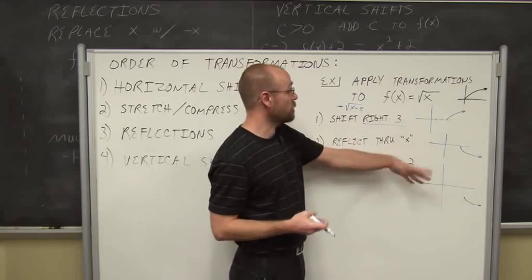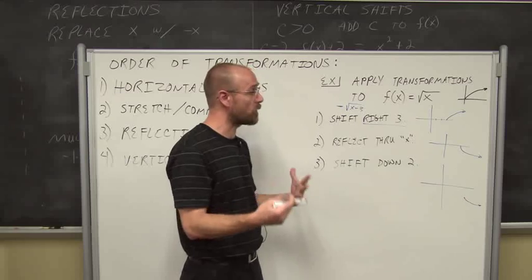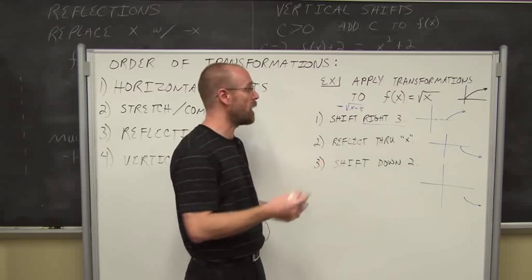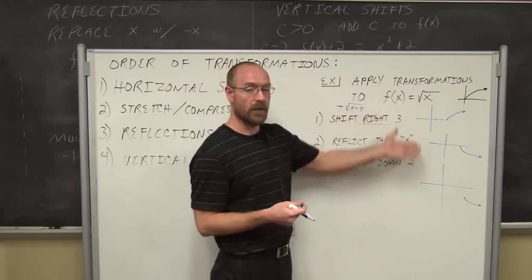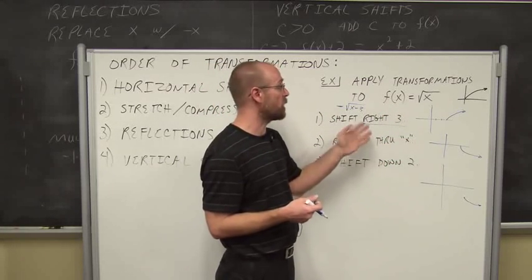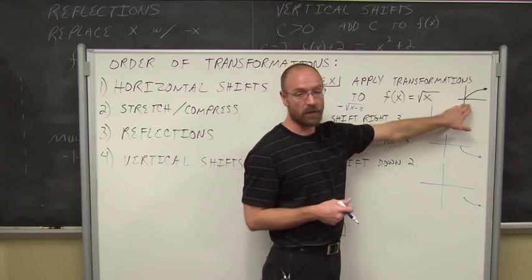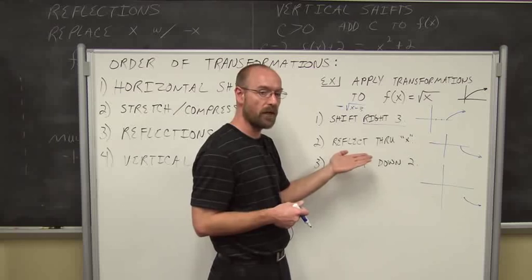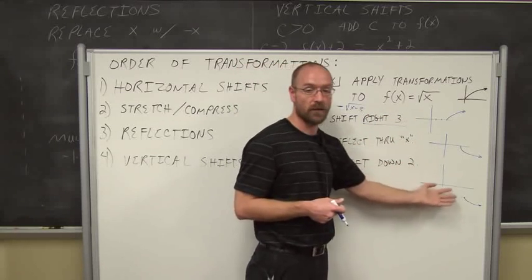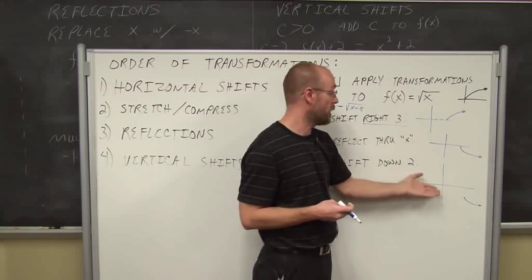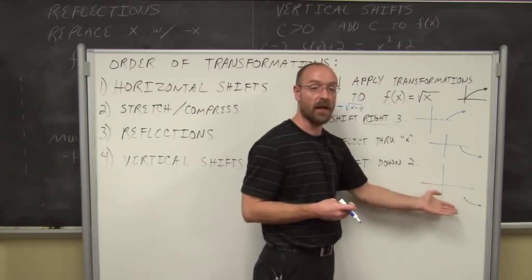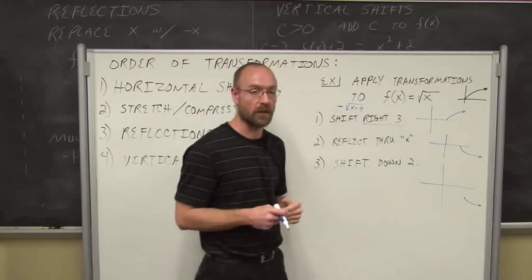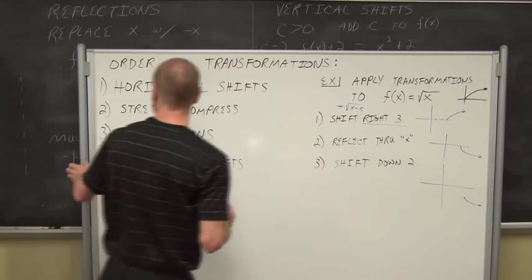So this is relatively simple. When we deal with linear functions, we always needed two points to graph a line. For nonlinear equations, we need more points, but if we understand the library function's behavior, we can use transformations to understand what the graph looks like — knowing only one reference point, maybe its intercept or vertex.